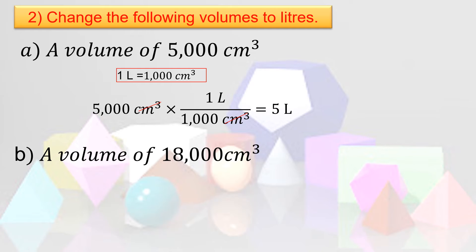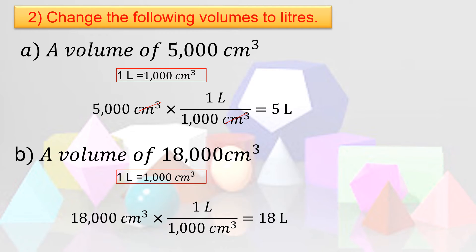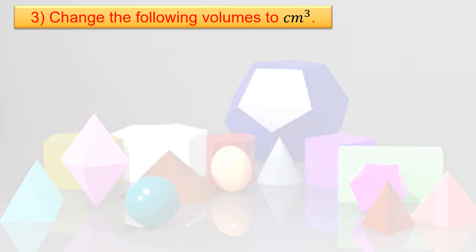Now let us convert 18,000 cubic centimeters to liters. We know 1 liter equals 1,000 cubic centimeters. Multiply by 1 liter over 1,000 cubic centimeters, then cancel cubic centimeters. Divide 18,000 by 1,000, which equals 18. Therefore, 18,000 cubic centimeters equals 18 liters. Now let us change the following volumes to cubic centimeters.